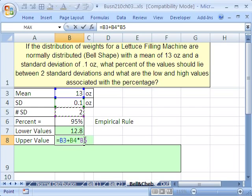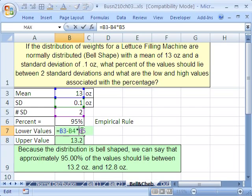Let's see. Did I put a two? Yeah, I did. I put the cell reference. So empirical rule, we say because the distribution is bell-shaped, we can say that approximately 95% of the values would lie between 13.2 ounces and 12.8 ounces.